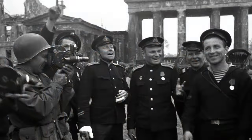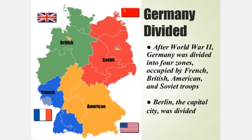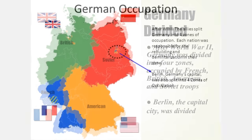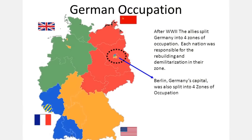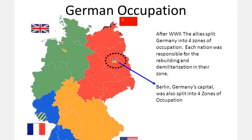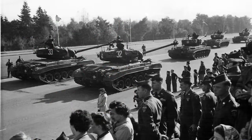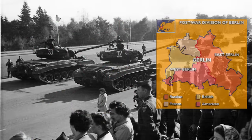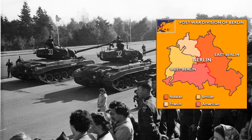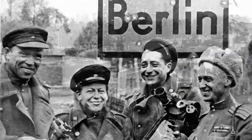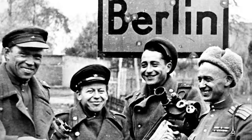At the conclusion of World War II, Germany was divided into four portions. The United States, Great Britain, France, and the Soviet Union each controlled one segment. The city of Berlin, which was located in the Soviet sector, was also split into four similar segments. The Americans, British, and French portions joined together to create West Berlin, while the Soviet region was known as East Berlin.